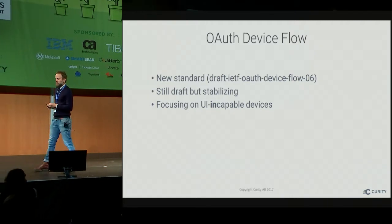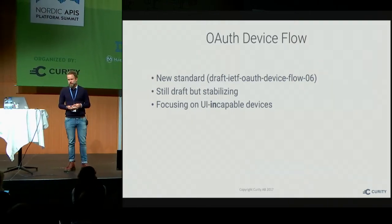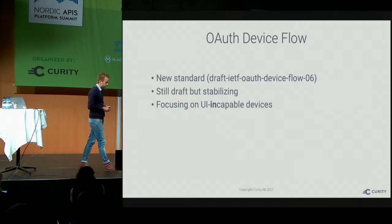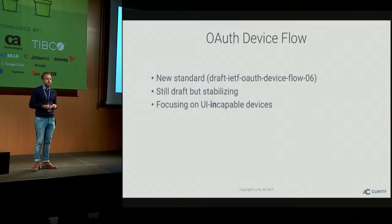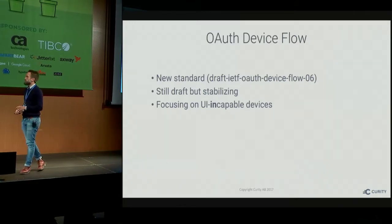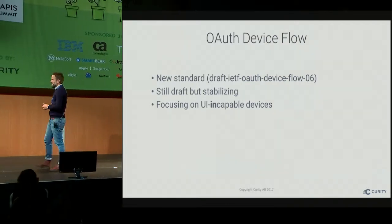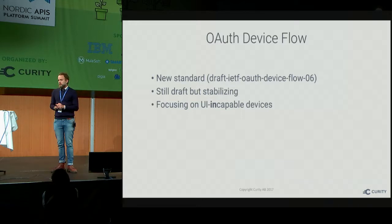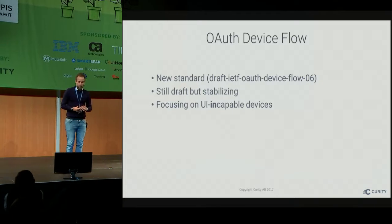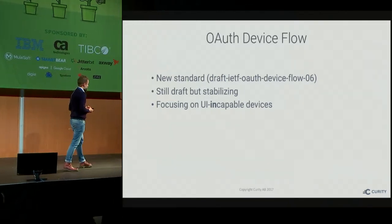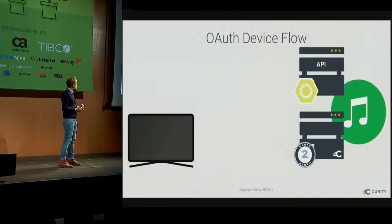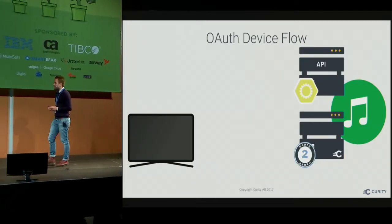Luckily, there's a new OAuth draft. It's pretty stable now — it's at draft 6 and hasn't changed much in the last few versions. It's called the OAuth Device Flow. So instead of the code flow or the resource owner flow, you can use the device flow. It focuses on devices — or clients, in OAuth lingo — that are UI-incapable, perhaps without any graphical user interface, and definitely not web devices in most cases.